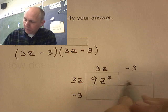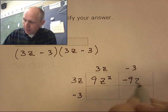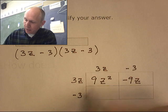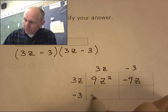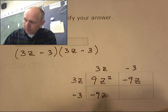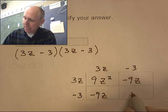3z times negative 3 is negative 9z. 3z times negative 3 is negative 9z. And negative 3 times negative 3 is 9.